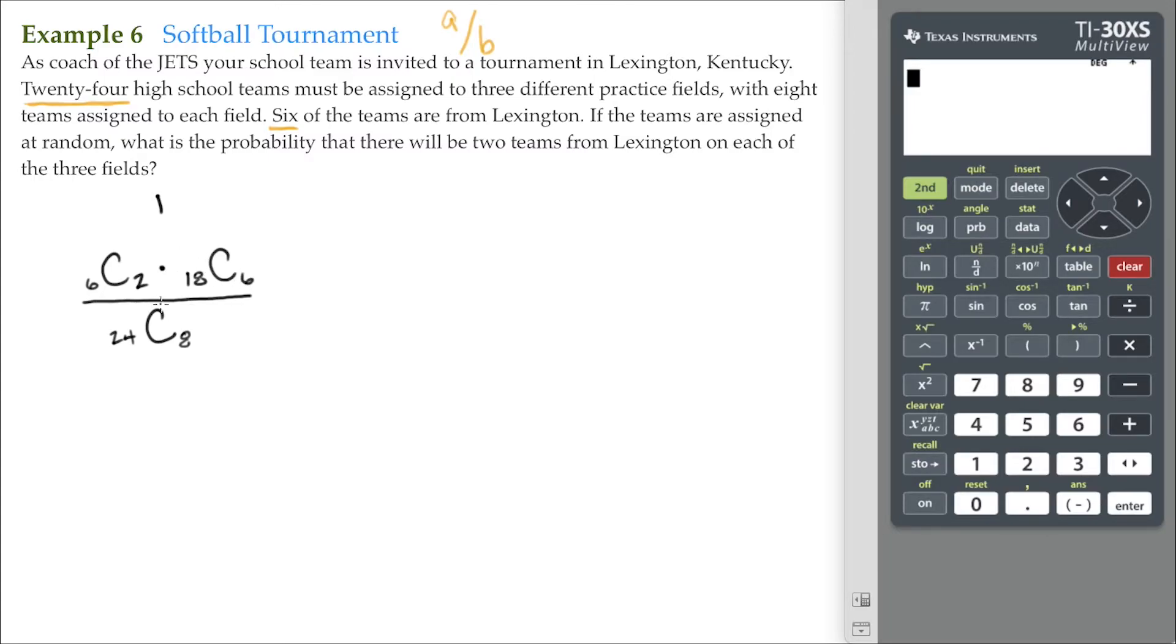And, of course, if we look at our subscripts here, six and 18, that's 24, and two and six, that's eight. So, this is the probability of two teams from Lexington being assigned to the first field. And we'll just leave it like that for now.